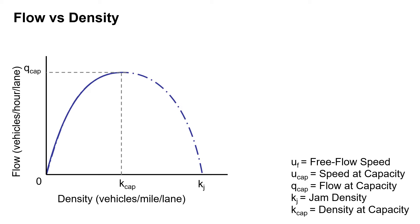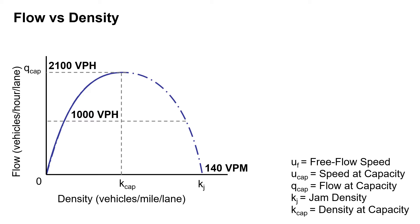Now we can look at flow versus density, and we have this parabolic relationship between the flow and the density. Plugging in the values that we know, we have our jam density of 140 vehicles per mile and our maximum flow of 2,100 vehicles per hour. We're asked for the point where we have 1000 vehicles per hour, and we should see on this parabolic shape that we're going to have two places where this occurs — both over-saturated conditions and under-saturated conditions, essentially under and over capacity.